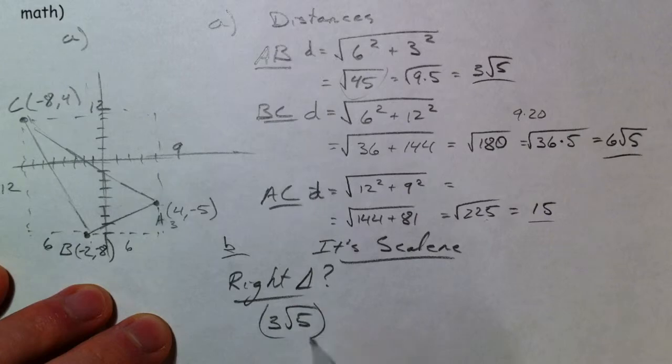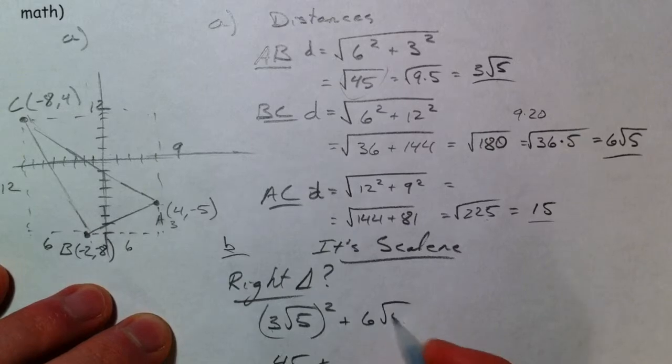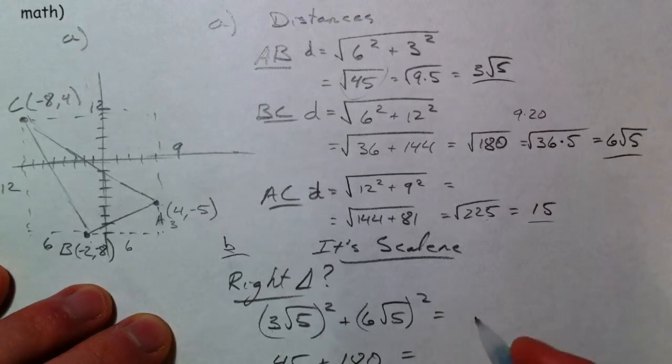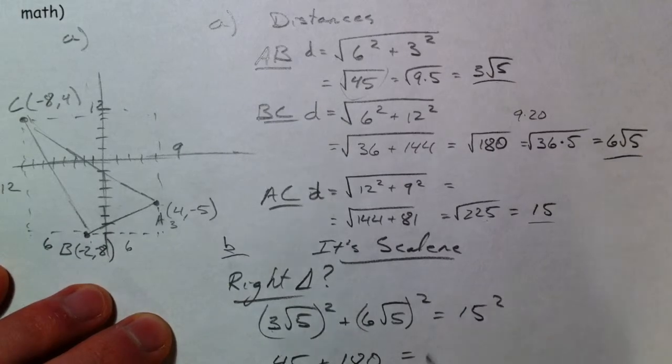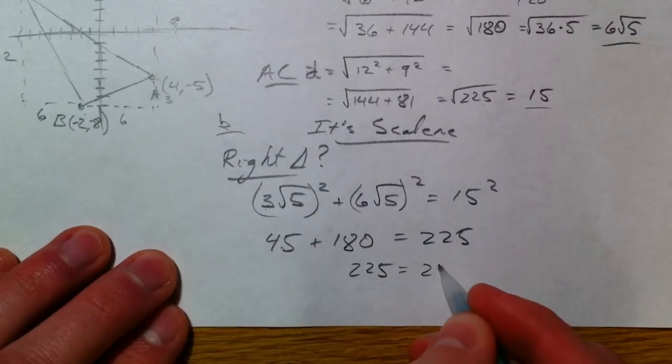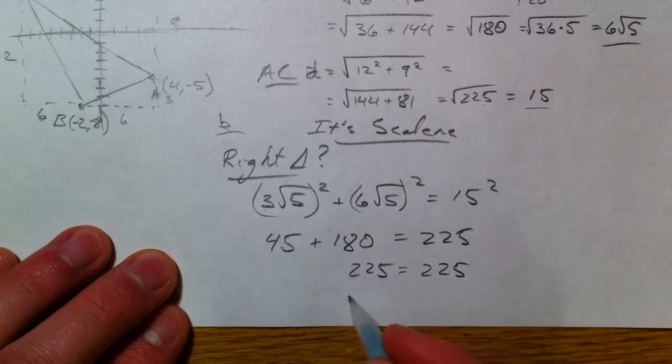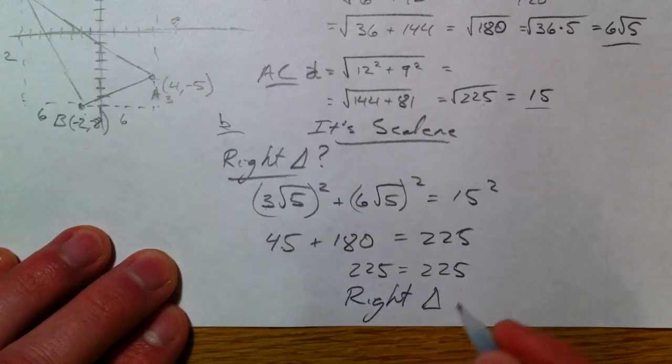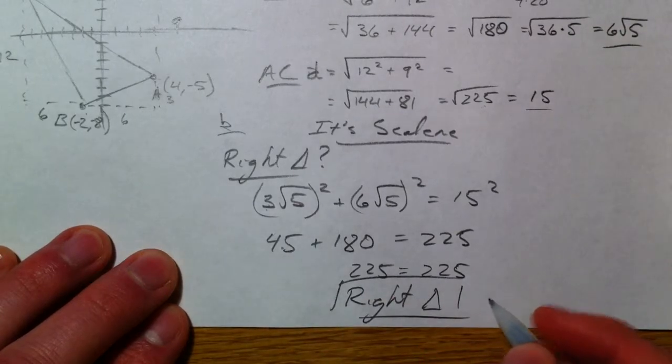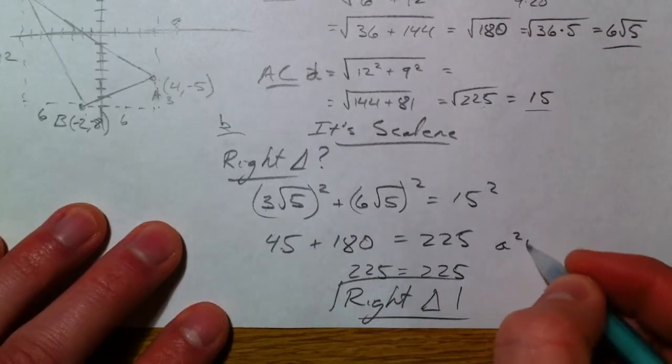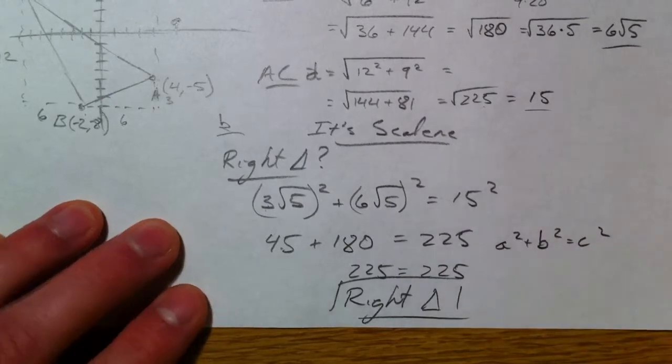So I'm going to go back to 3 root 5 squared, that's the same thing as 45. 3 times 3 is 9 times 5, plus 6 root 5 squared. Again, that's the same as the 180. Is that equal to 15 squared, 225? 225, sure enough, is equal to 225. And you get it's a right triangle. A squared plus B squared equals C squared. So it's a right triangle.